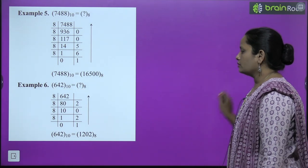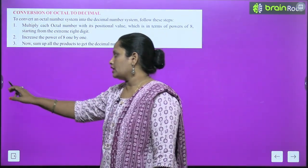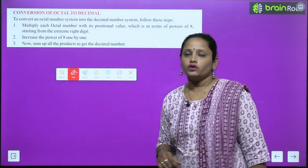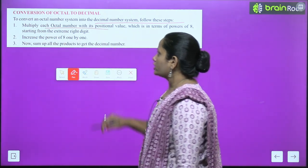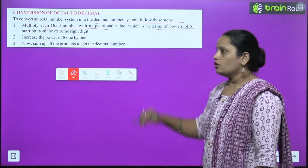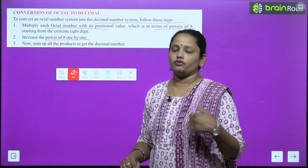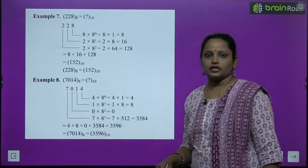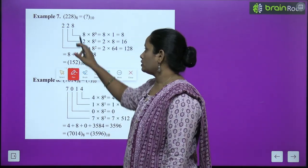So that is how we convert decimal to octal. Next is conversion of octal to decimal. Same as before, we will use multiplication. To convert an octal number system into decimal, multiply each octal digit with its positional value, which is in terms of the power of 8. For example, the octal number 228 — we write 228 and assign powers of 8 starting from the right.